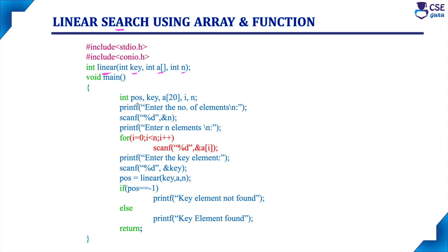Inside the main function, we have declared the integer variable 'position' — which position the key element is found. 'Key' is the search element, 'array' is the array, 'i' is the variable used in the for loop, and 'n' is the number of elements present in the array. Initially, we get the n value — how many elements we are entering into the array. For example, we will take five elements.